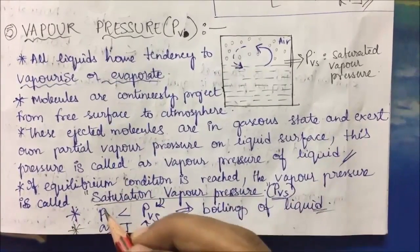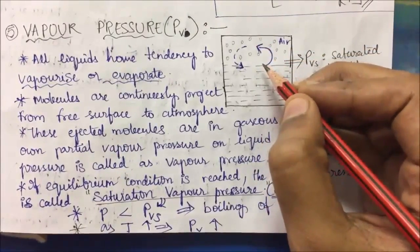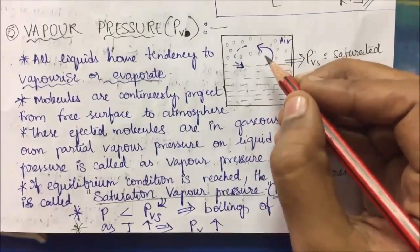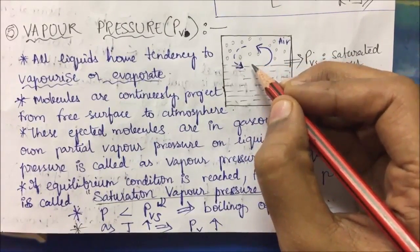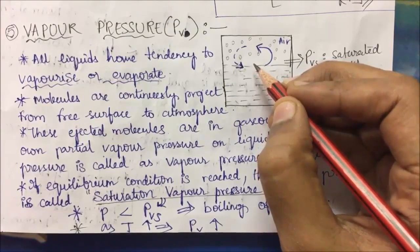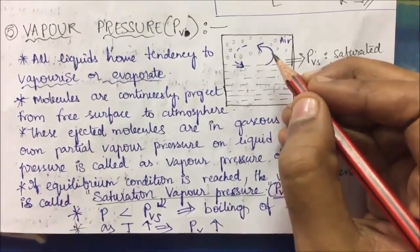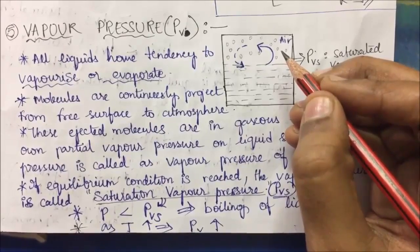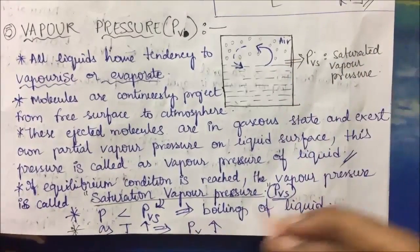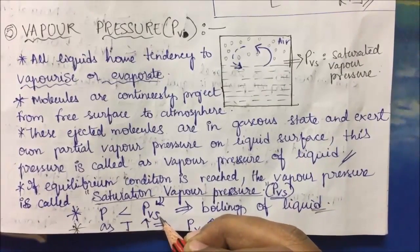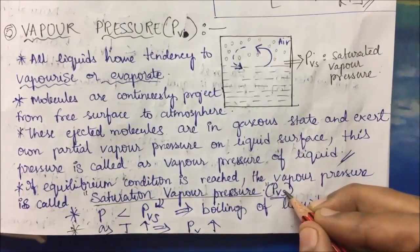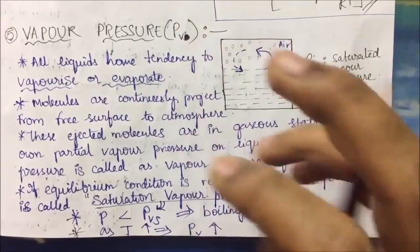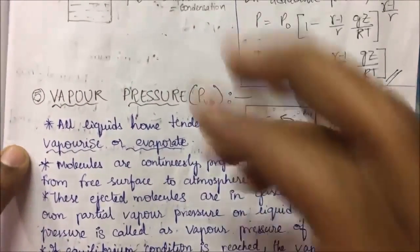In equilibrium condition, when the evaporation rate equals the condensation rate, the partial vapor pressure exerted by the gaseous state on the liquid is called saturated vapor pressure. Many people confuse vapor pressure with saturated vapor pressure. Vapor pressure is a phenomenon found at all conditions, but saturated vapor pressure is found only at the equilibrium state. If the pressure of the fluid falls below the saturated vapor pressure, boiling will occur. Saturated vapor pressure is represented as Pvs and vapor pressure as Pv.